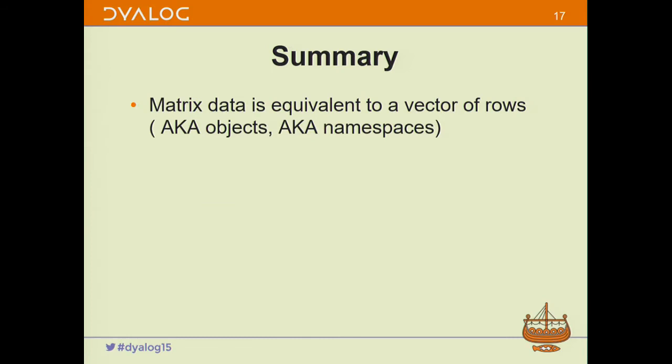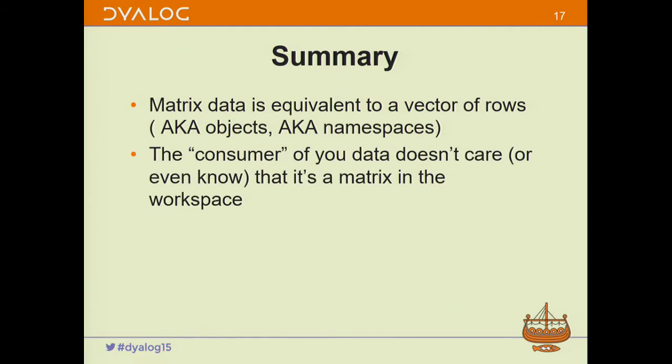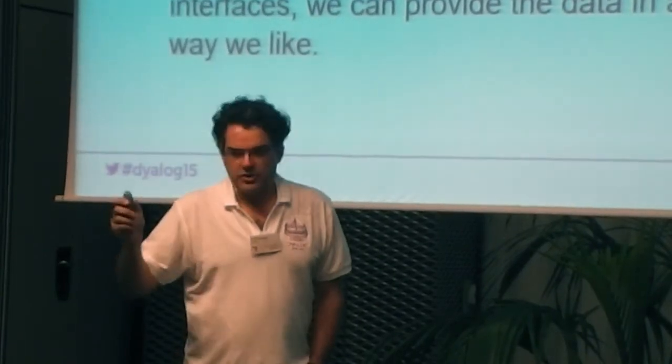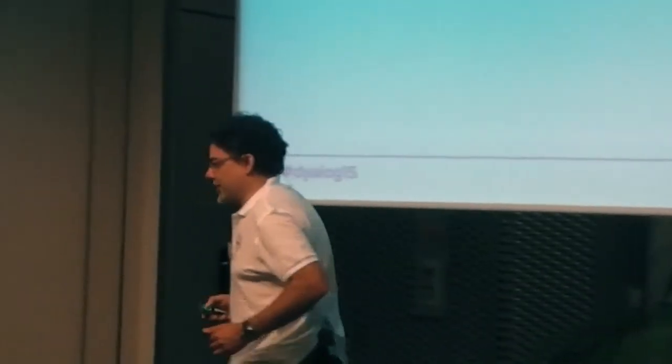Matrix data is equivalent to a vector of rows, which is equivalent to a vector of objects, which in the workspace is equivalent to a vector of namespaces. The consumer of your data doesn't know or care what the internal format is. As long as we implement the interfaces, it doesn't matter what format our data is in — the other end doesn't see it, doesn't know, doesn't care.